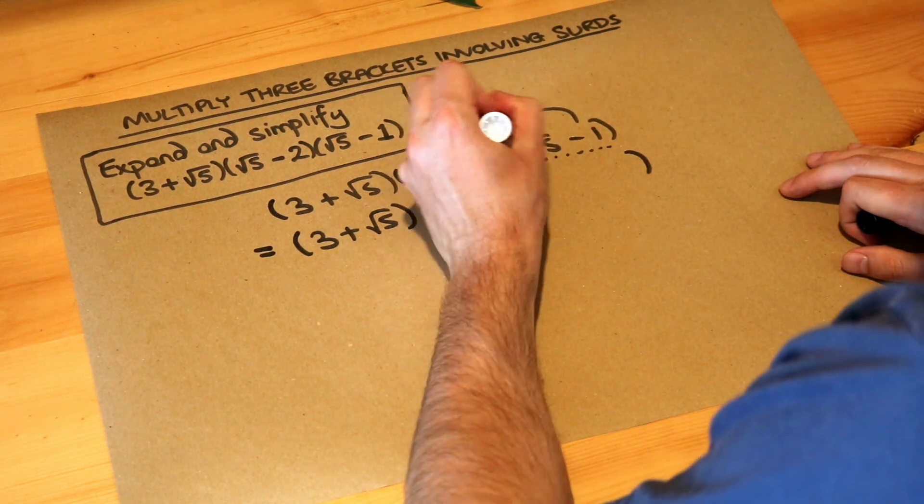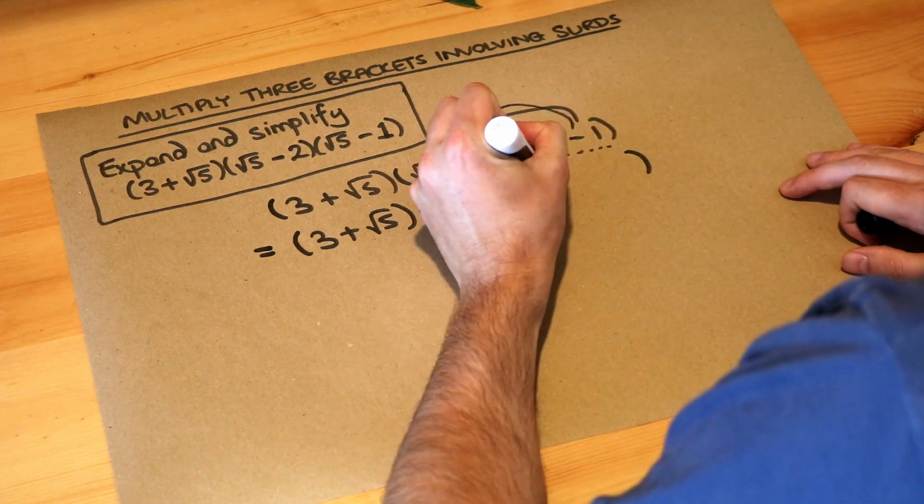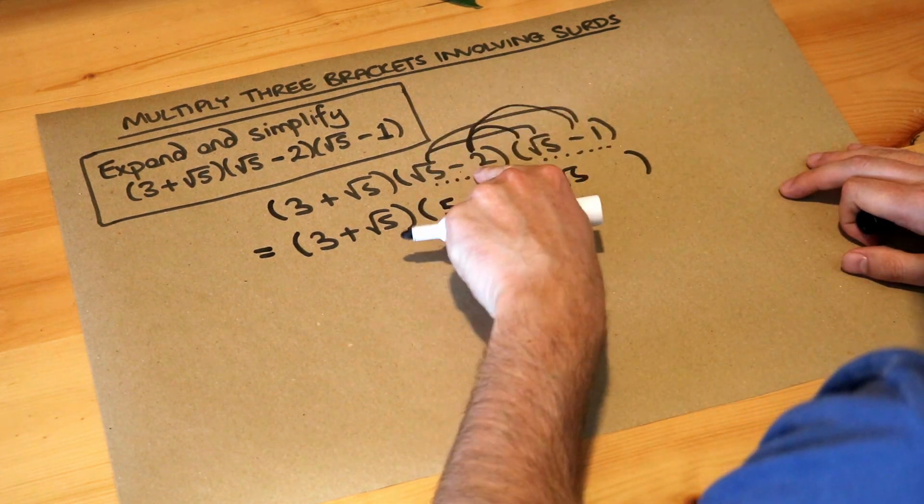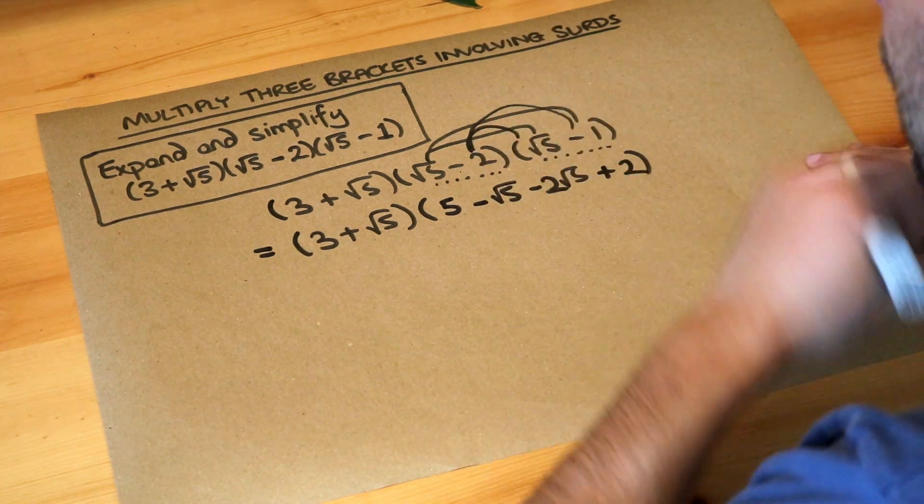Then we've got the -2 multiplied by each of these things. -2 times √5 is -2√5. And -2 times -1 is positive 2, since negative times negative is positive.